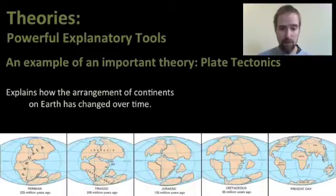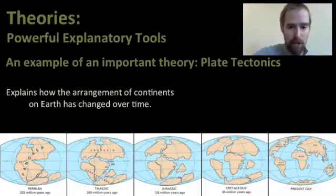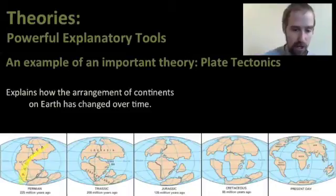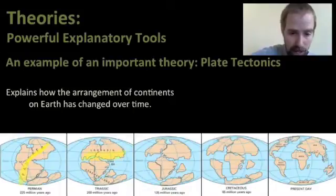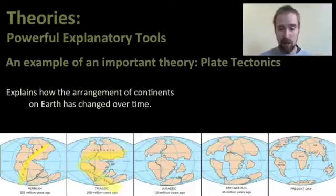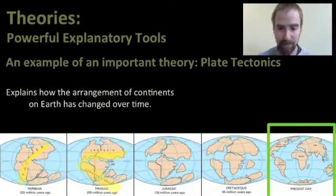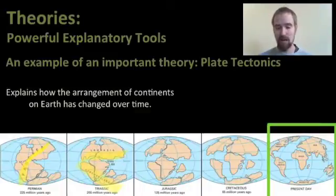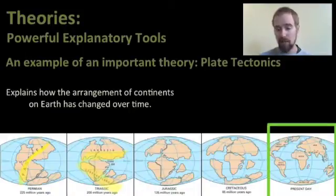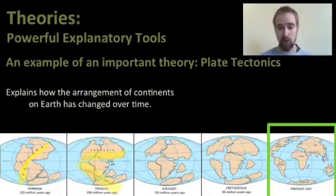Plate tectonics also helps us explain how the arrangement of continents on Earth has changed over time. At some point in the past there was a supercontinent called Pangaea, and over time it broke up into two smaller continents called Laurasia and Gondwanaland. Those two supercontinents continued to break up into smaller and smaller pieces until we get the arrangement of continents familiar to us today. It also helps us predict how continental arrangements will continue to change and how things like climate and weather may change as continents continue to rearrange themselves.